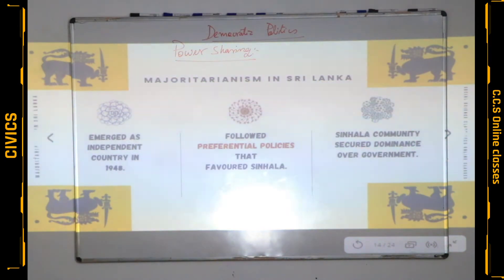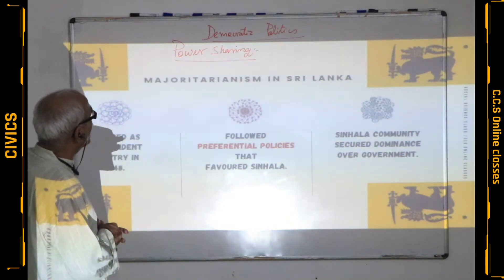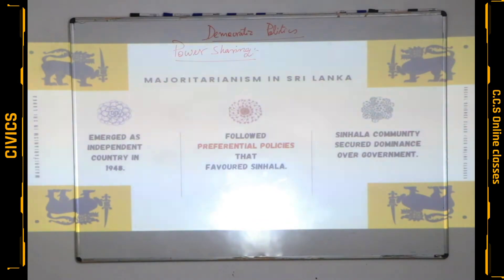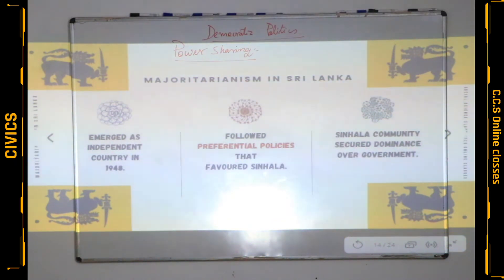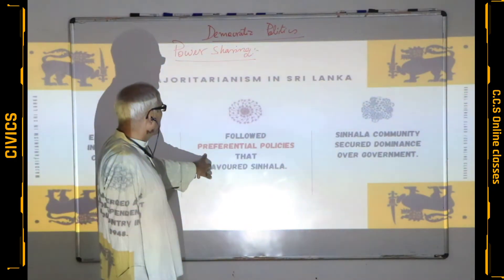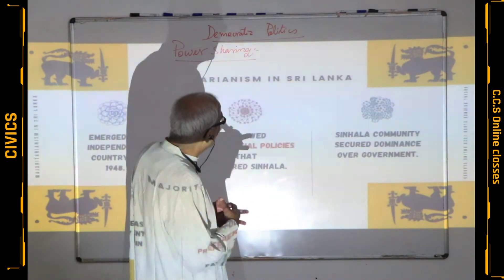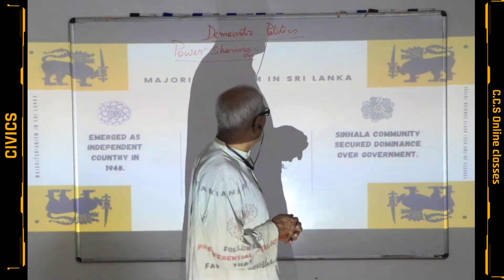What happened in Sri Lanka? Taking the benefit of majoritarianism, the Sinhala speakers — being 74% — the Sri Lankan government took majoritarian steps in the country, which were against the spirit of power sharing. They followed preferential policies that favoured the Sinhala majority.